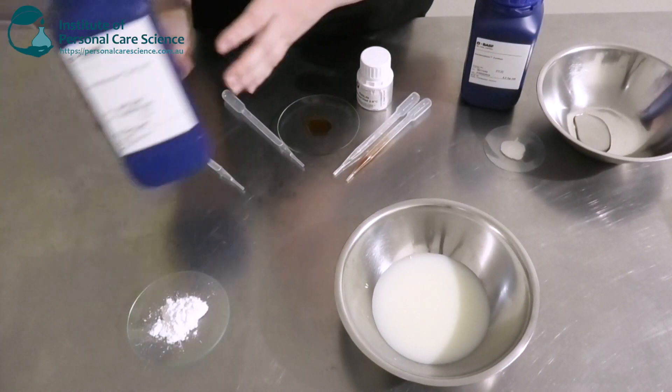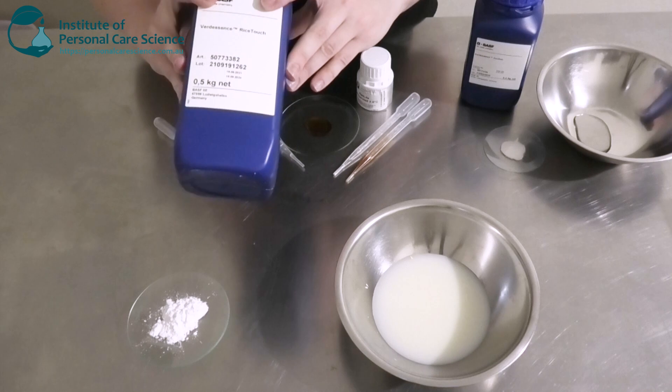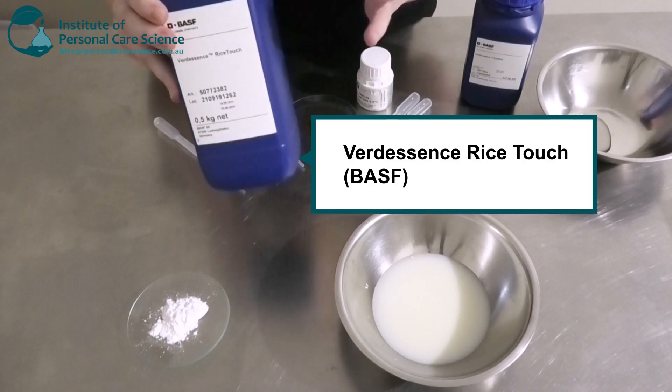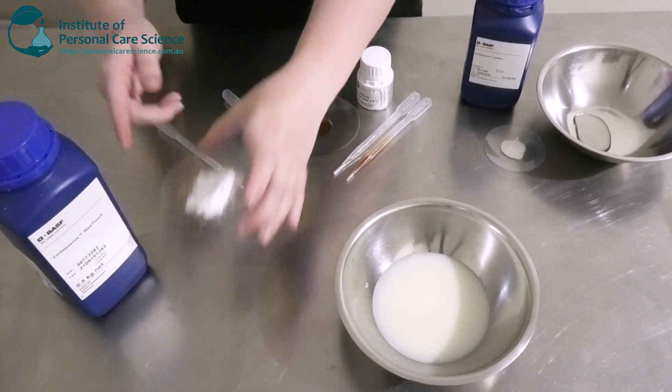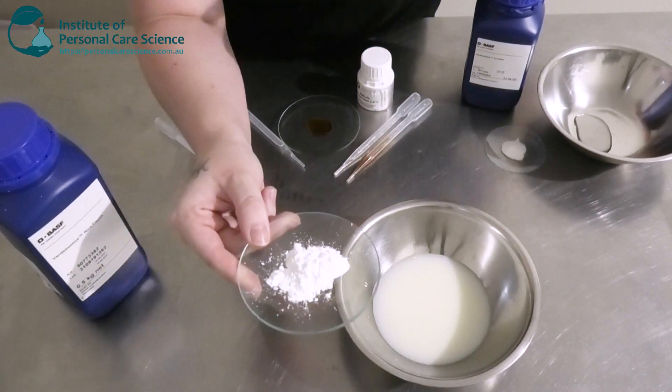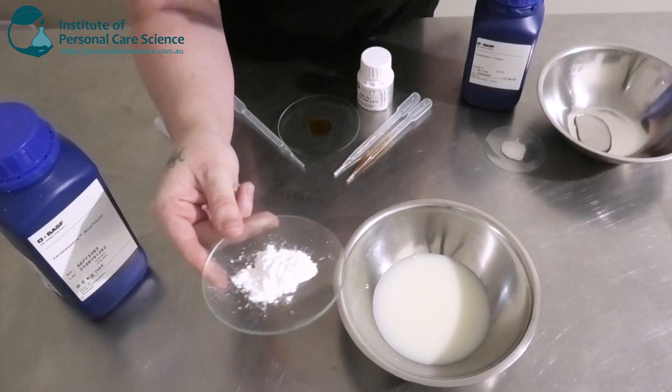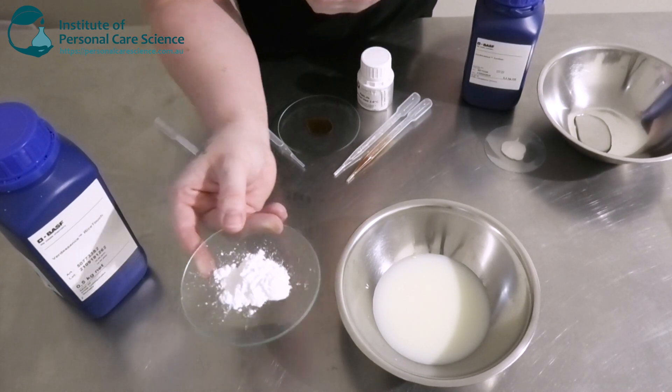My next ingredient here I am going to be adding for sensory is the Verdescence Rice Touch powder. So this is a natural sensory powder. It's going to help give a nice mattifying effect to my serum but also oil absorbing as well.